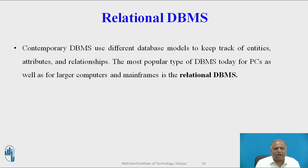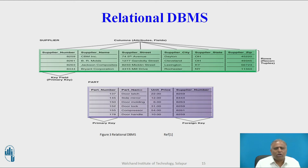Now, relational database management systems. Contemporary DBMS use different database models to keep track of entities, attributes, and relationships. The most popular type of DBMS today — used on PCs as well as mainframe computers — is the relational DBMS. Relational databases represent data as two-dimensional tables, which may be referred to as files. Each table contains data about an entity and its attributes. Microsoft Access is a relational DBMS for desktop systems, while DB2, Oracle Database, and Microsoft SQL Server manage larger systems. MySQL is a popular open-source DBMS. This diagram shows a relational DBMS where supplier and part tables are connected using supplier number as a primary key in the supplier table and as a foreign key in the part table, demonstrating how two or more tables can be connected in a relational DBMS.